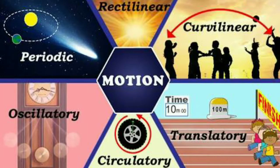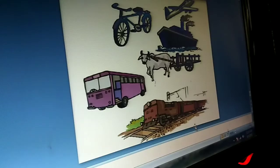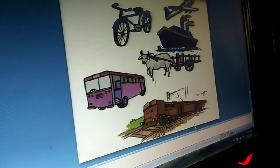Previously, when the wheel was not invented, people used to travel by walking. After the wheel invention, carts were made first, then boats, bicycles, trains, cars, and aeroplanes — all were designed after the invention of the wheel.